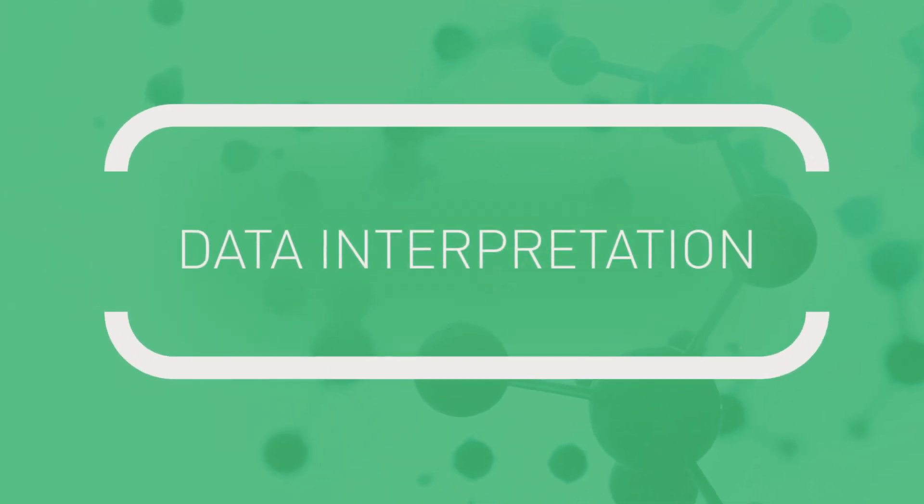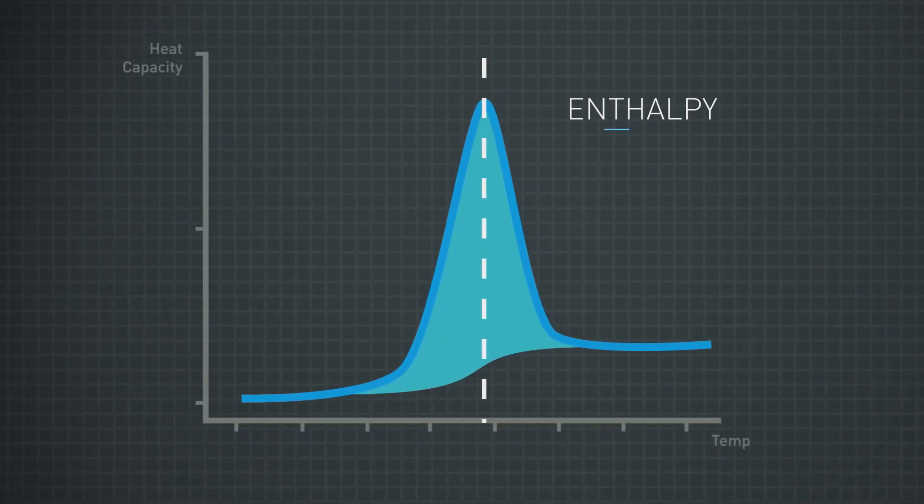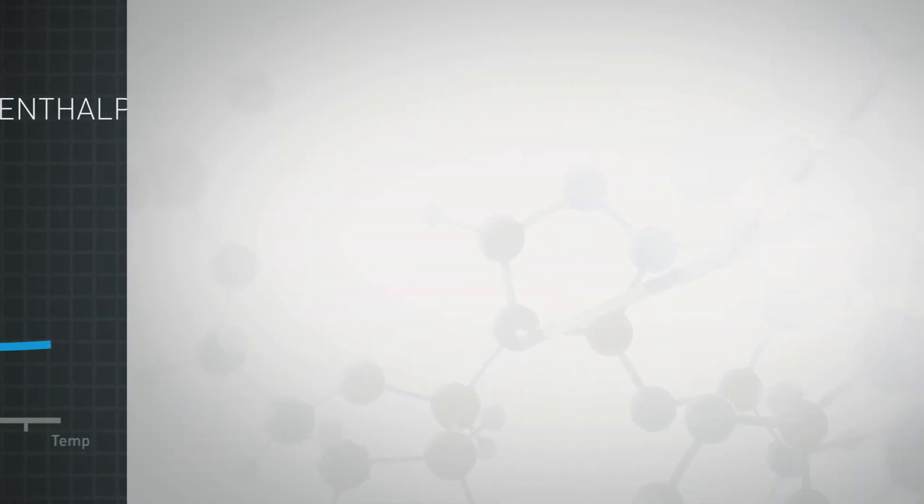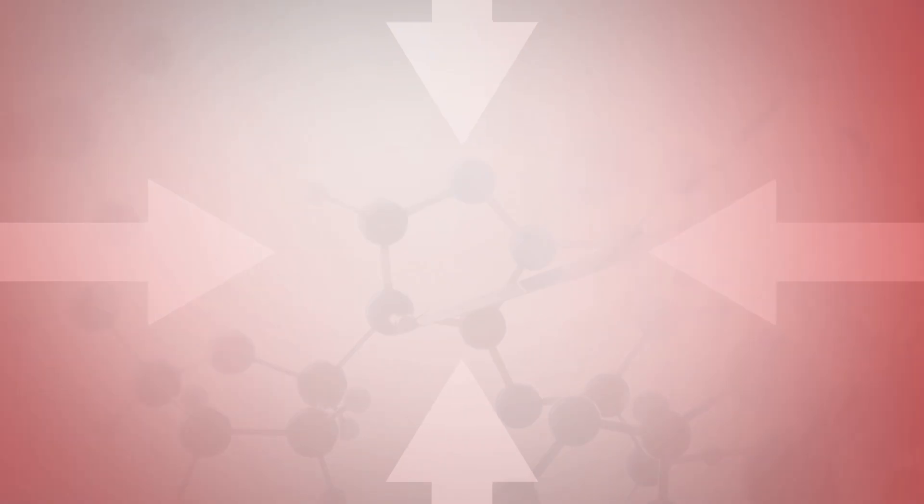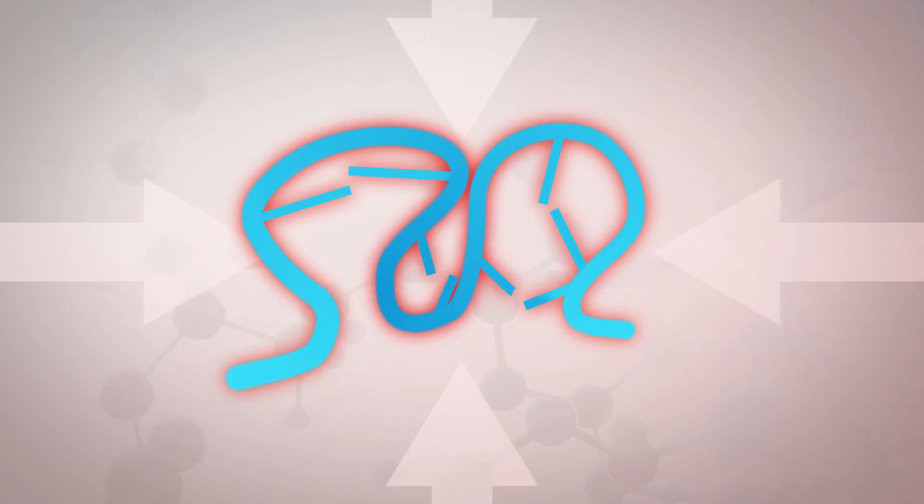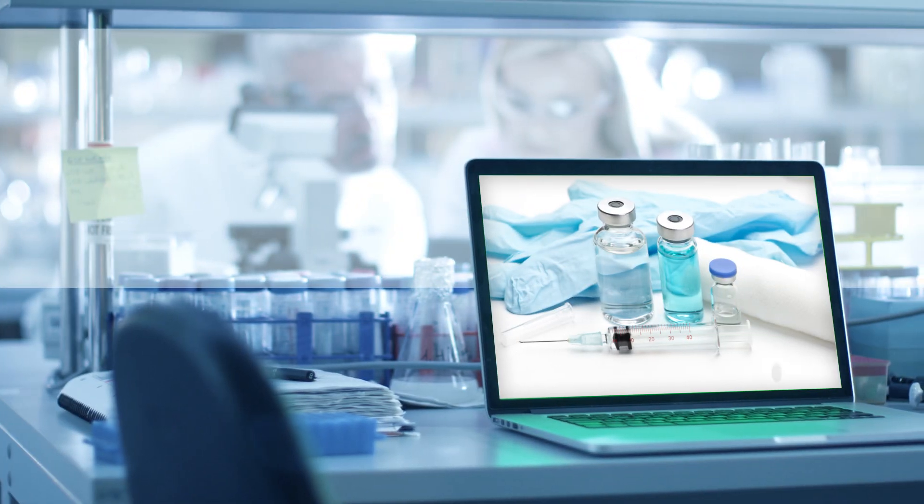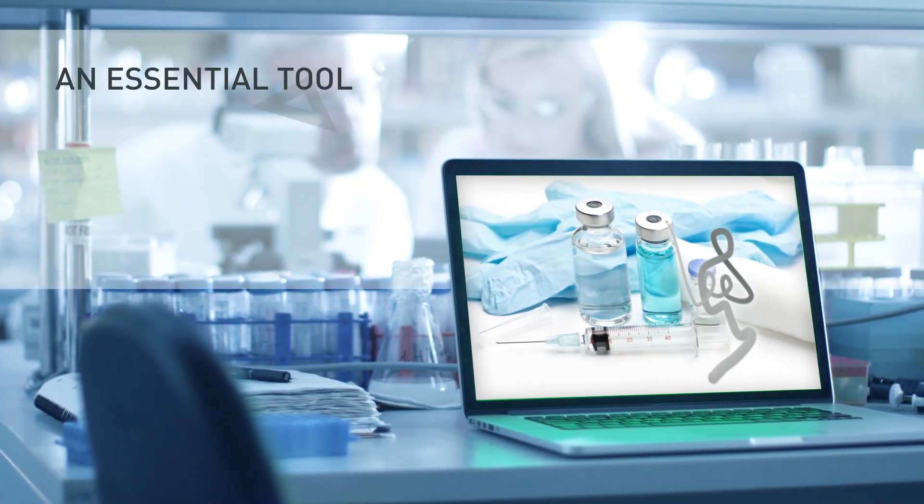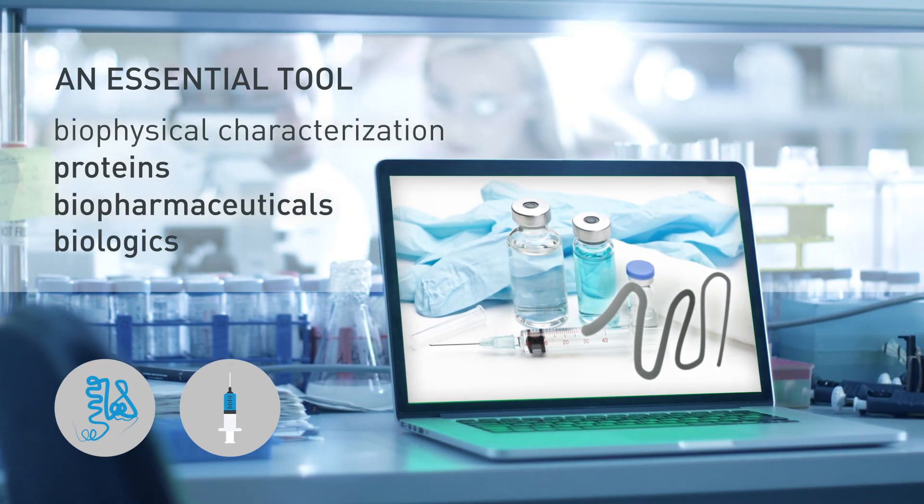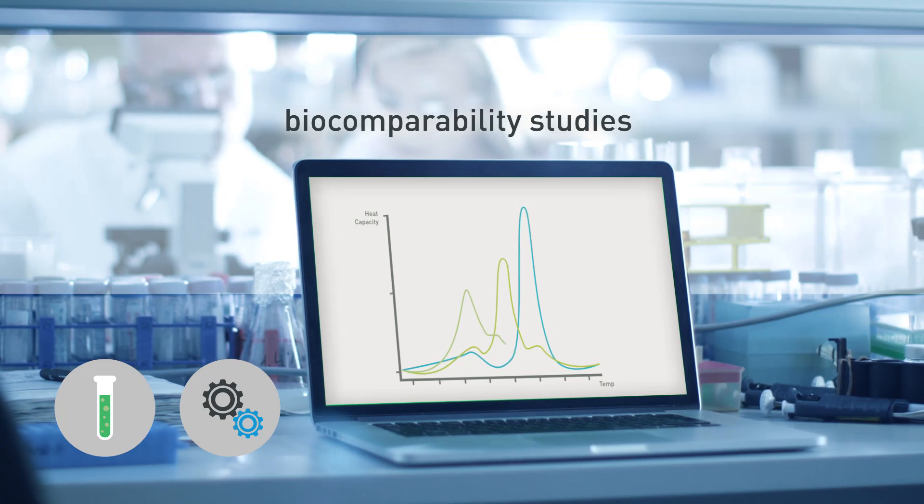Data interpretation: The area under the peak is the total energy change enthalpy that corresponds to the protein unfolding. This is an endothermic reaction since energy is required to break the non-covalent bonds which maintain the protein in its higher-order structure. Thermal stability data from DSC is an essential tool in the biophysical characterization of proteins and biopharmaceuticals during protein engineering, formulation development, and biocomparability studies.